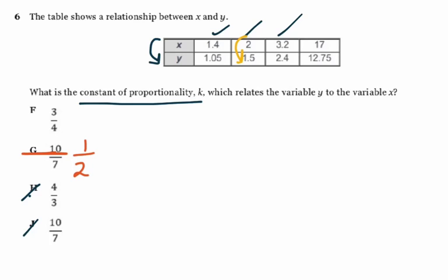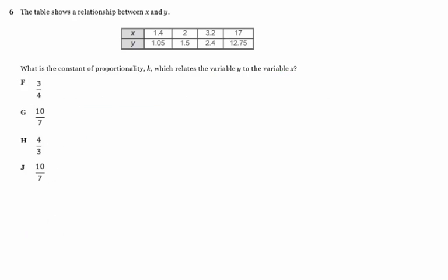So in order to figure out what we are multiplying by, just like we did if you did question 5 this way, you can take one of these y values and divide it by the corresponding x, and you can figure it out. Now, I would pick one that is easier to work with. 2 and 1.5 is the easiest one to work with. So you can put 1.5 inside the box. Always put your y inside the box. Divide it by 2, and this will tell you what your constant of proportionality is.